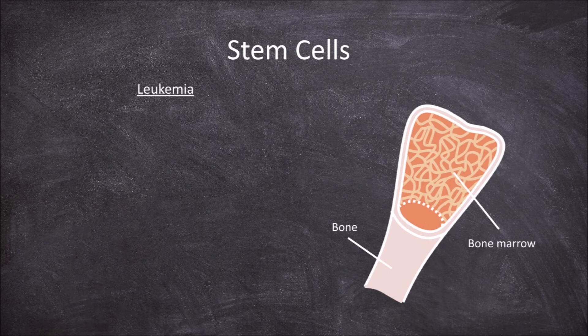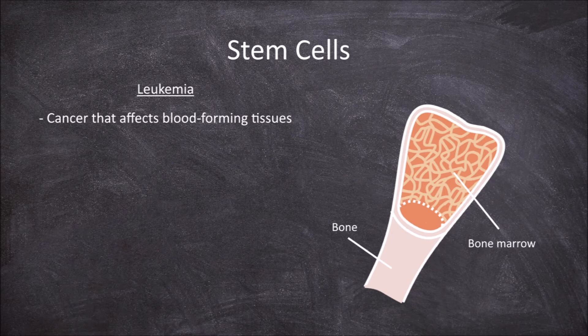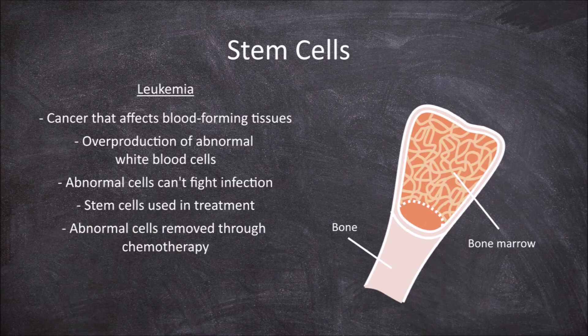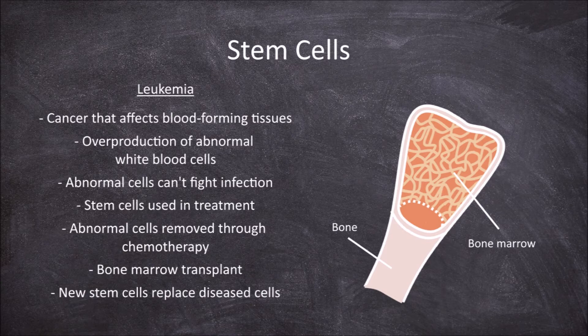Leukemia is an example of a disease where stem cell therapy is used to treat. Leukemia is a form of cancer affecting the blood-forming tissues such as the bone marrow and the lymphatic system. It is caused by the overproduction of abnormal white blood cells called leukocytes, which cannot fight off infection. First, all the abnormal leukocytes need to be removed, such as through chemotherapy. Once they are removed, a bone marrow transplant can occur, replacing the diseased stem cells producing the abnormal white blood cells with new multipotent cells that form healthy blood cells.